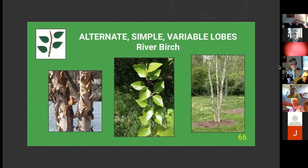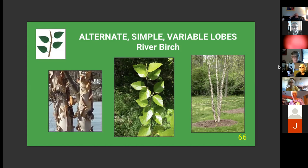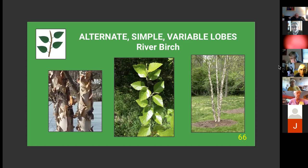The fourth tree with variable lobes is the river birch. Though the guides classify them as variably lobed, the leaves in Ohio look more like big teeth. The truly distinctive feature is the bark — peeling, orange or pink in color, very characteristic. River birch often has multiple trunks if not pruned, making it popular for landscaping. They can grow quite large — 80 feet, a couple feet in diameter — and it's a good furniture wood, mainly in the southern U.S.